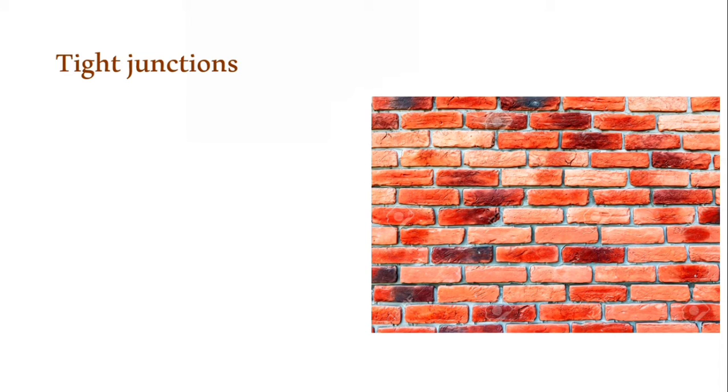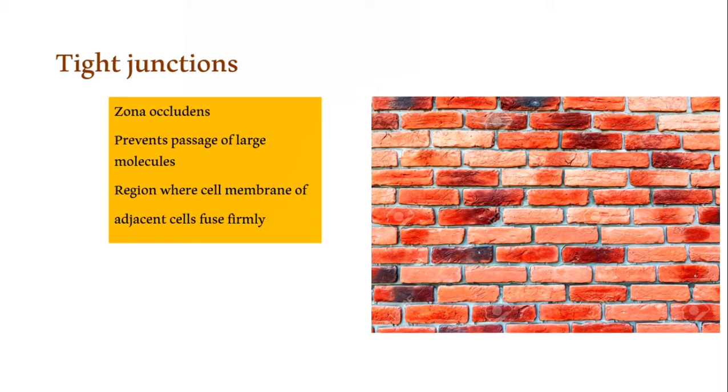The most common example of occluding junctions is the tight junction. So it is like a brick wall. When it is cemented properly, it is strong and nothing can get through it. It is also called zona occludens. This specifically prevents passage of large molecules. When the molecular weight or size of particular substance is more than the pore size, it is not going to pass through. But small molecules may. It is a selective barrier for extremely small molecules. These tight junctions are seen in regions where the cell membranes of adjacent cells fuse very firmly.